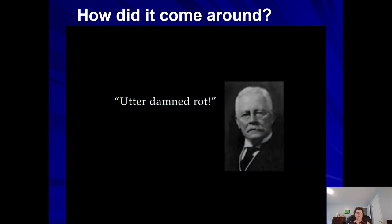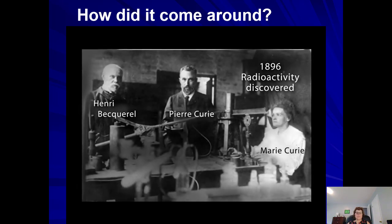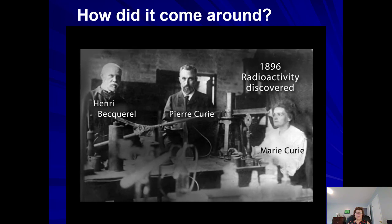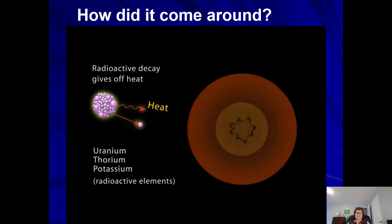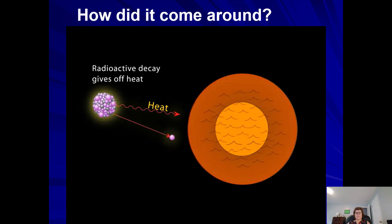His views were considered preposterous and improbable and were rejected by most Earth scientists. Following the discovery of radioactivity in 1896, it became clear that Earth's interior was heated by radioactive decay, and that the insides would be largely molten.